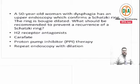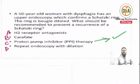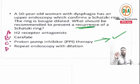A patient has an upper endoscopy which confirms a Schatzki ring and is being dilated. What should be recommended to prevent a recurrence of a Schatzki ring? The answer is proton pump inhibitor therapy. PPI therapy helps to reduce the recurrence of Schatzki ring. Remember this for your NEET super specialty exam paper 1 - the answer to which modality prevents recurrence of Schatzki ring should be proton pump inhibitor therapy.